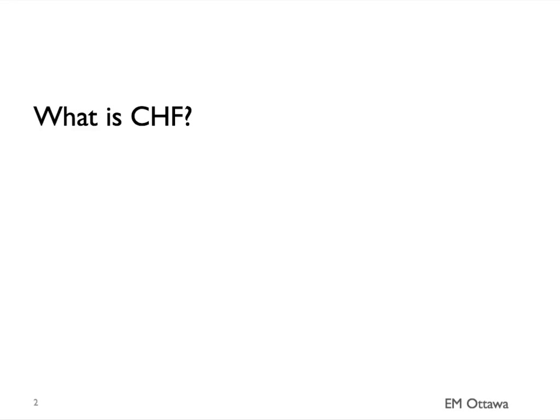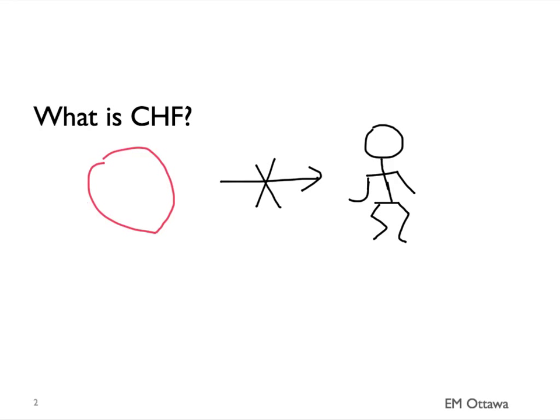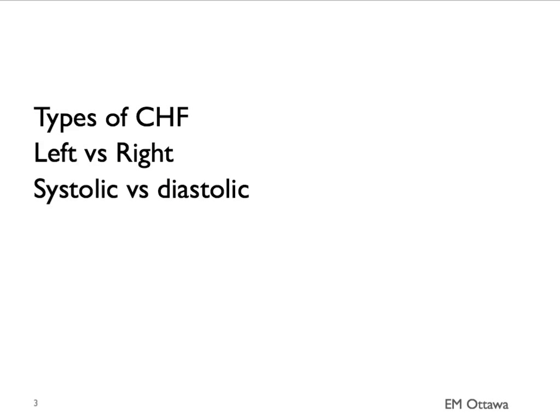What is congestive heart failure? A broad definition is that the heart is unable to meet the metabolic demands of the body. There are different types of congestive heart failure. It can be divided into left versus right-sided, or systolic versus diastolic.